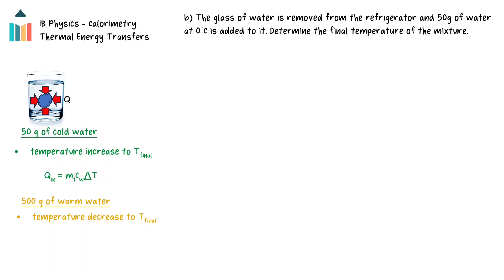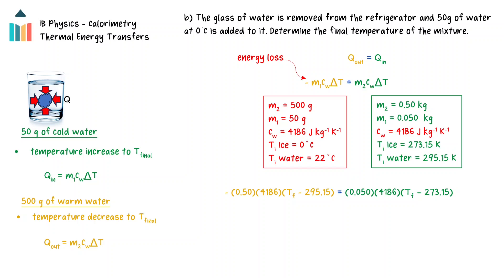The water in the glass will have transferred thermal energy into the cold water, and as a result its temperature will have decreased. The energy transferred from the warm water will be equal to mc delta T, assuming no energy is exchanged with the surroundings. The energy gained by the cold water must equal the energy lost by the warm water, so these expressions can be set equal to each other. Note the use of the negative sign for the warm water, as it has lost energy. Substituting the known values and solving gives a final temperature of 293 Kelvin, noting the required unit conversions before substitution.